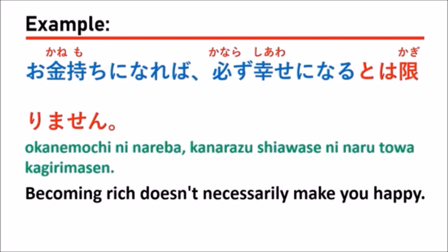必ず幸せになるとは限りません means that even if you are a rich man, it doesn't mean that everybody who is rich is happy. Even if you have a lot of money and are the richest person, you still may have many problems that make you unhappy like normal people. So it's not necessarily true that every rich man is happy when they get rich.